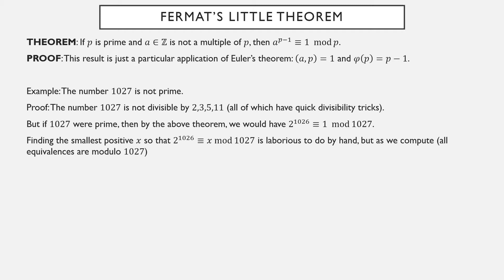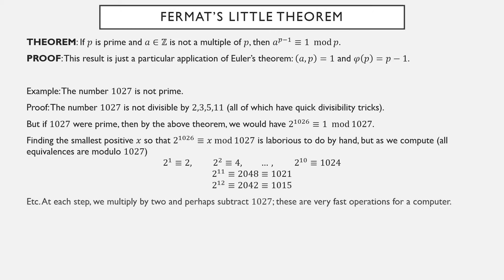Finding the smallest positive x so that 2 to the 1026 is equivalent to x mod 1027 is laborious to do by hand, but we can do it. So 2 to the 1st is 2, 2 to the 4th is 4, and so forth, up to 2 to the 10th is 1024. At each step, all we're doing is multiplying by 2 and subtracting 1027. Multiply by 2 until multiplying by 2 is bigger than the base, then subtract 1027. It's very fast for a computer at least.